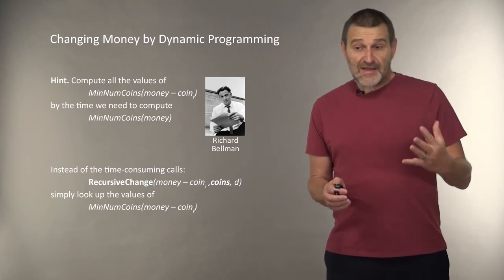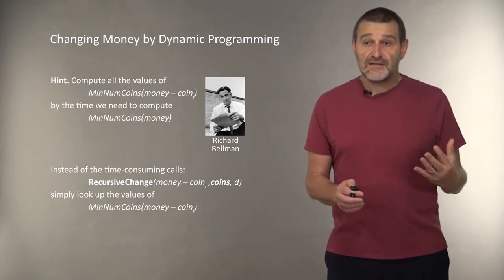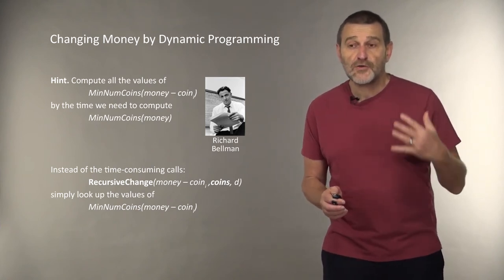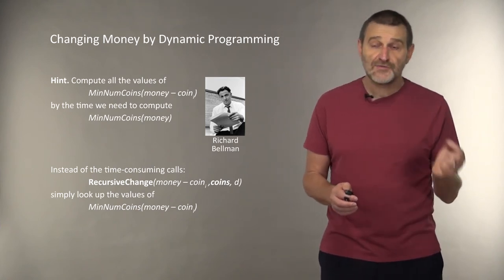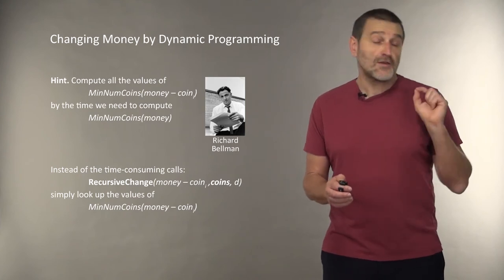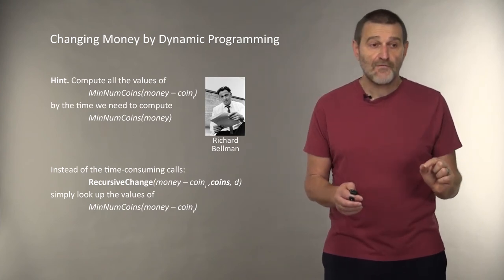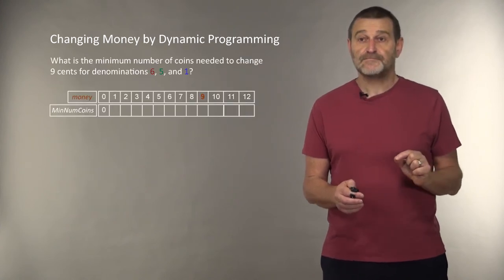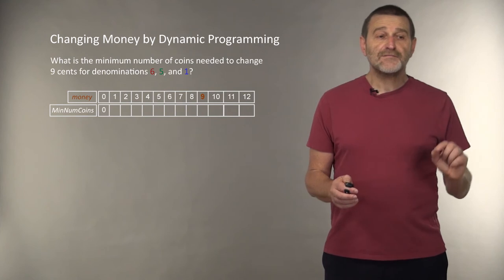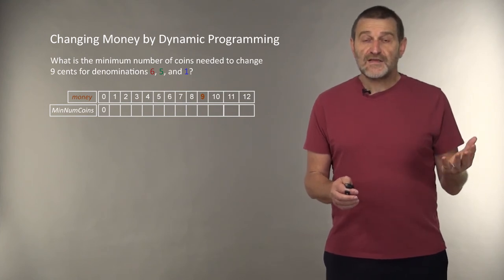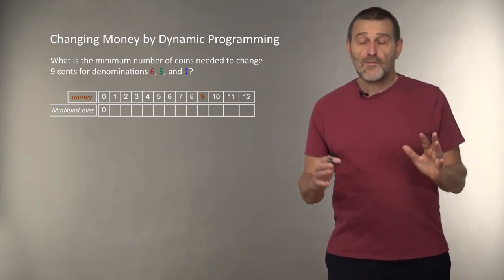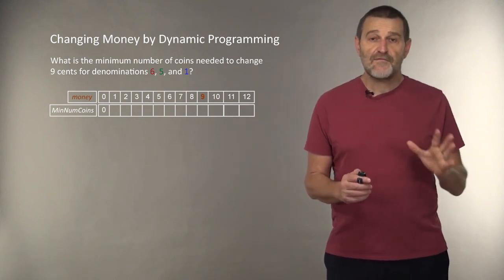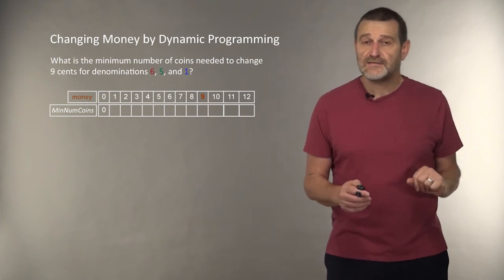And to implement it, the only thing that we need, instead of the time consuming calls to recursive change for money minus coin i, we simply look up the values of minimum number of coins for money minus coin. So, how does our algorithm change? Instead of moving from larger values to smaller values to fill this table, we will now move from smaller values to larger values.